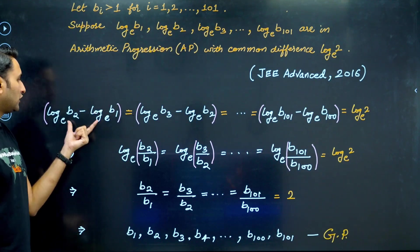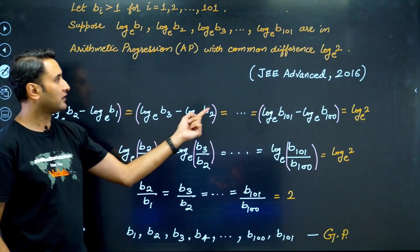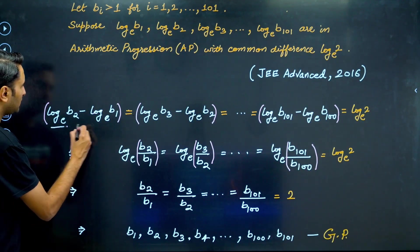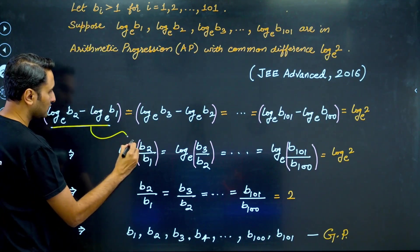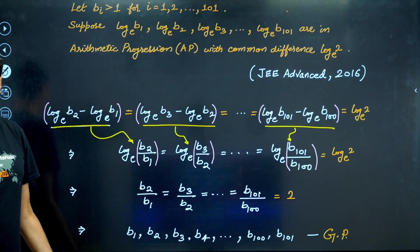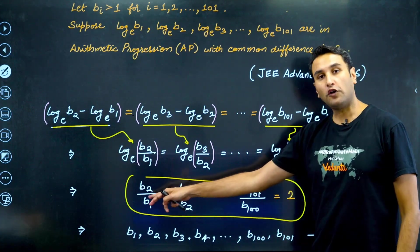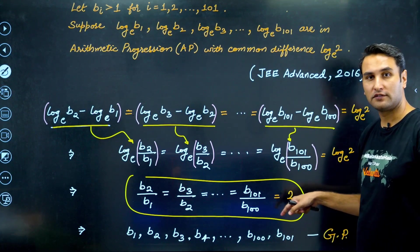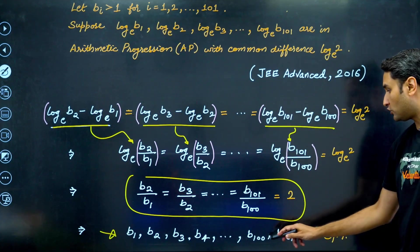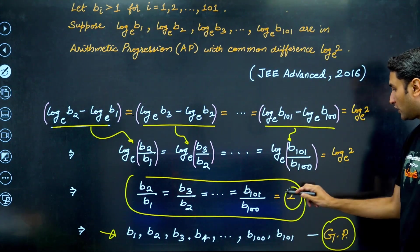Since this is in AP, the difference of corresponding terms is equal - second minus first equals third minus second, all equal to the common difference log 2. Using the log property, this becomes log(b2/b1) equals log(b3/b2) equals log 2. Remove the log: the ratios of consecutive terms b2/b1, b3/b2 are all constant and equal to 2. This means b1, b2, b3, up to b101 is actually a GP with common ratio 2.